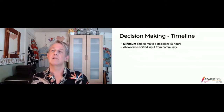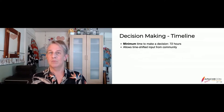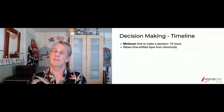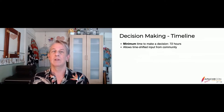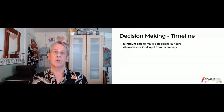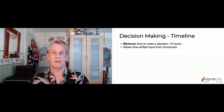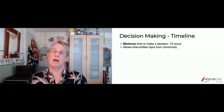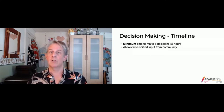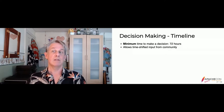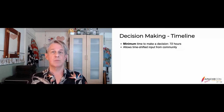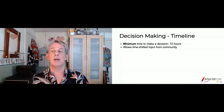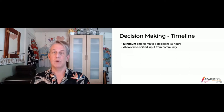An important part of decisions is the timeline. We have a minimum decision cycle of 72 hours. Whenever we're making a release or making a major code donation, you need to open a vote or consensus and have it open for at least 72 hours, because this allows time-shifted input. People in another time zone or away for a weekend have a chance to jump in and comment. There are some exceptions — for an urgent security release, we don't need the 72 hours.